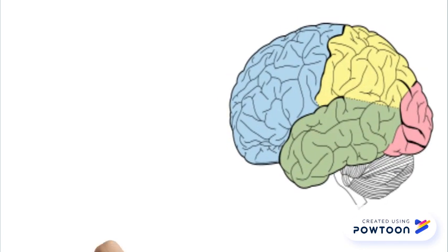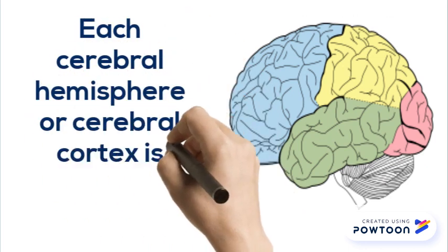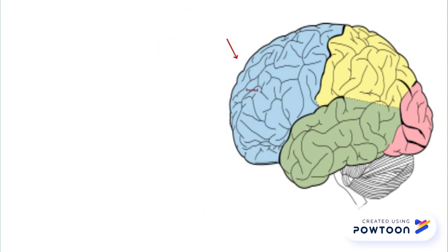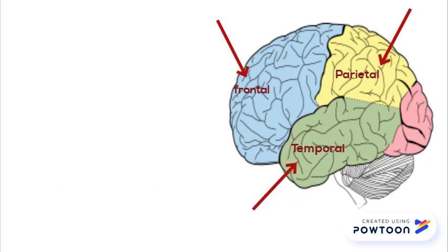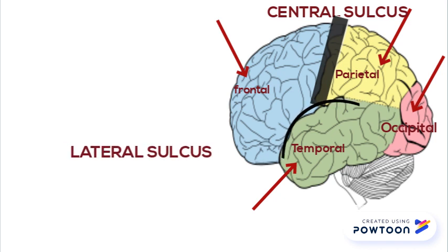Each cerebral hemisphere or cerebral cortex is divided into four lobes: the frontal, the parietal, the temporal, and the occipital. The frontal lobe is separated from the parietal lobe with the help of the central sulcus, and the temporal lobe is separated from the frontal and parietal lobes with the help of the lateral sulcus.